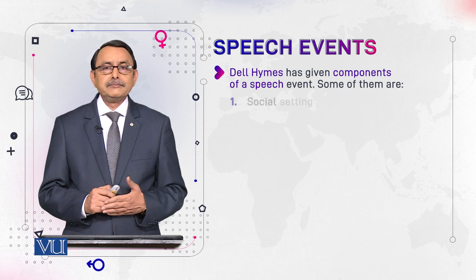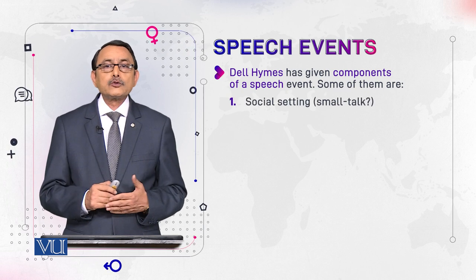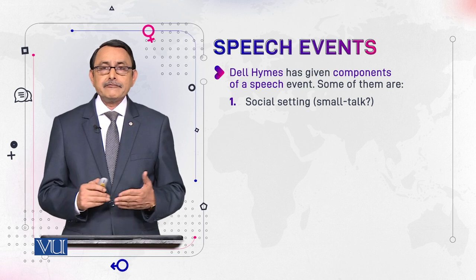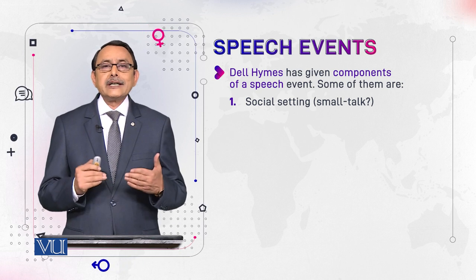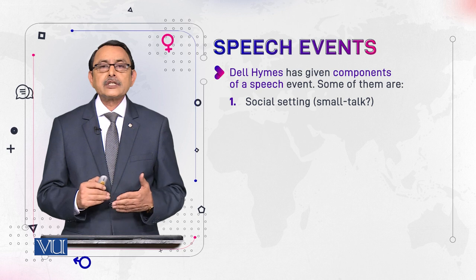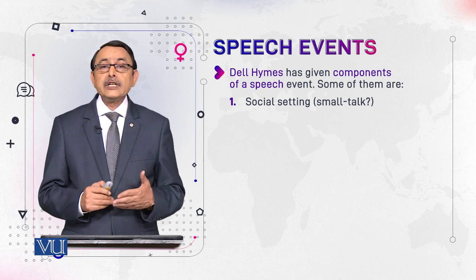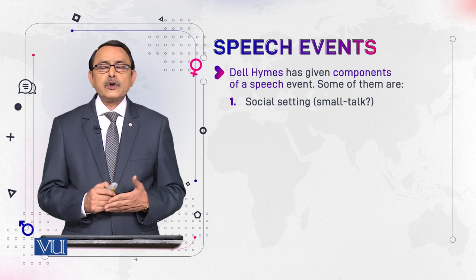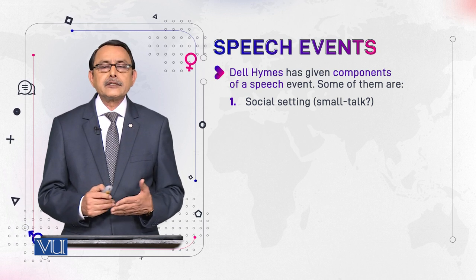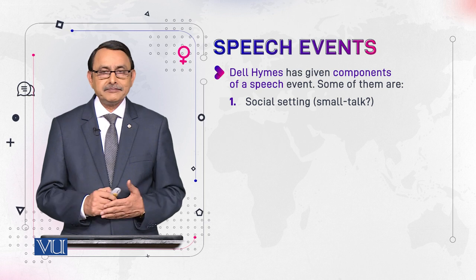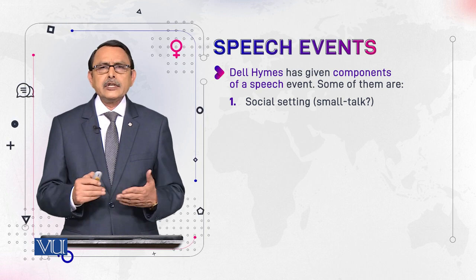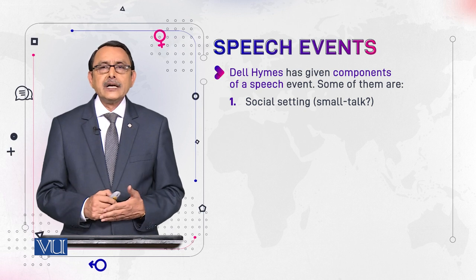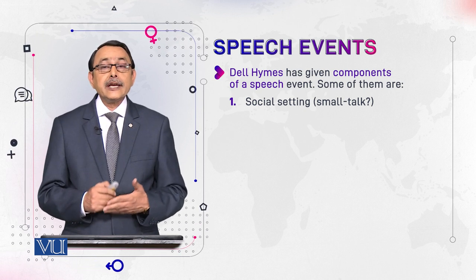Some of these components are: first of all, a speech event has a social setting. For example, if our speech activity is small talk, it would be done in a situation like waiting at a bus stop where we have to kill time. In this social setting, such kind of talk can be done.